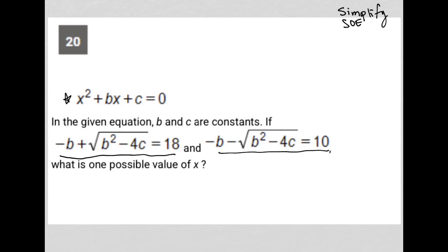The question says x² + bx + c = 0. In the given equation, b and c are constants. If that first equation and this second equation here, what is one possible value of x?